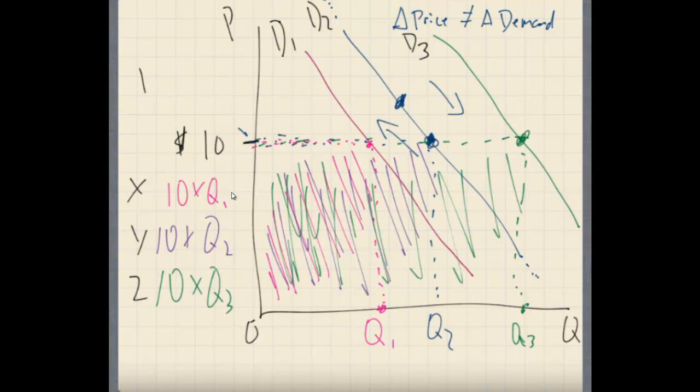Now what do we know about these values? We know that x is going to be less than y, and y is going to be less than z. Because we know that the quantity here, because as we move right along our Q, what always happens, right? We are increasing the quantity. Just like when we move up along the y-axis, we're increasing price, right? When we move right along our x-axis, we are actually increasing every time. So we know that Q2 is greater than Q1, and we know that Q3 is greater than Q2.